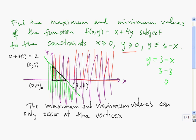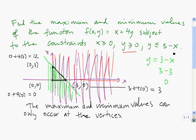At the vertex (0, 0), x is 0 and y is 0, so we have 0 plus 4 times 0, which is 0. Finally, at the vertex (3, 0), x is 3 and y is 0, so we have 3 plus 4 times 0, which is equal to 3. So to find the maximum value of this function subject to these constraints, we're looking for the highest of the numbers. The maximum is 12, and the minimum is 0.